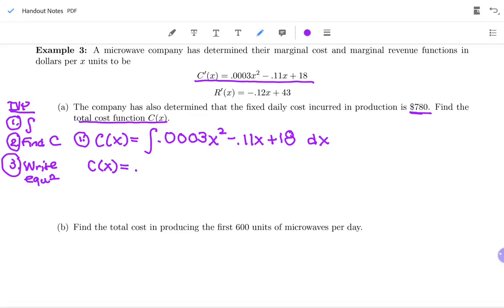So I do 0.0003, my constant here, would get divided by my new power. So 2 plus 1 is 3, x to the 3, minus 0.11, and that's going to get divided by - well, the power was 1, 1 plus 1 is 2 - x to the 2. And then the antiderivative of any constant, we're going to use that for 18. The antiderivative is going to be 18x. And this one, do I need a plus C or an evaluation bar? Well, there's no bounds on the integral. I'm back to having a plus C, which is perfect because my second step is to figure out what C is.